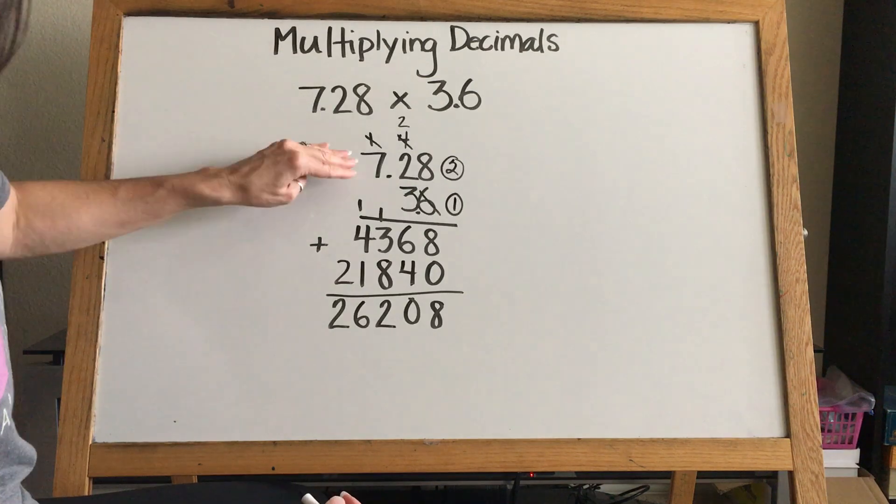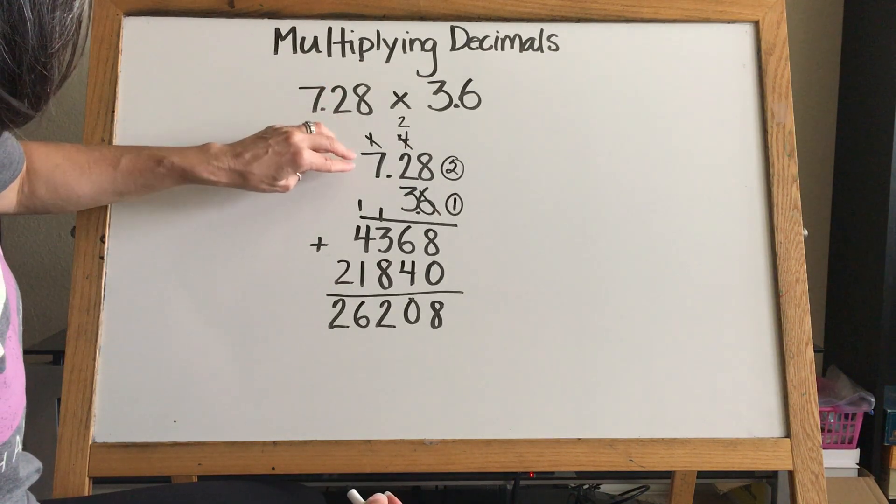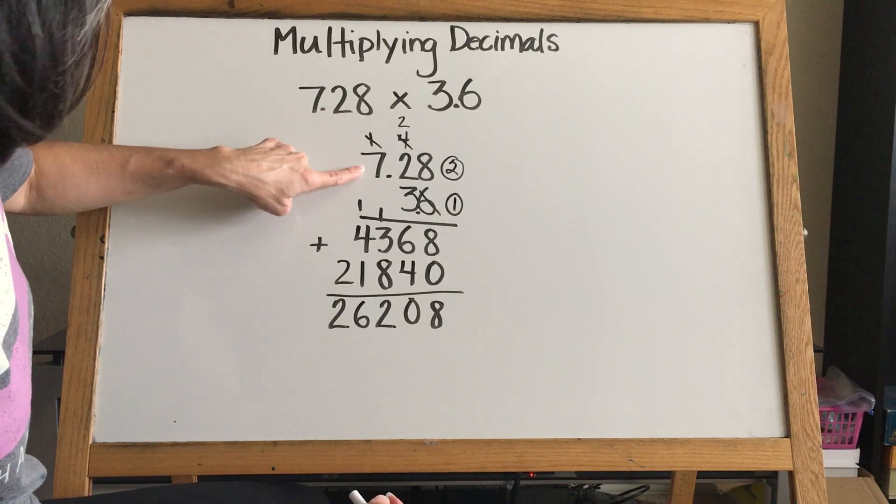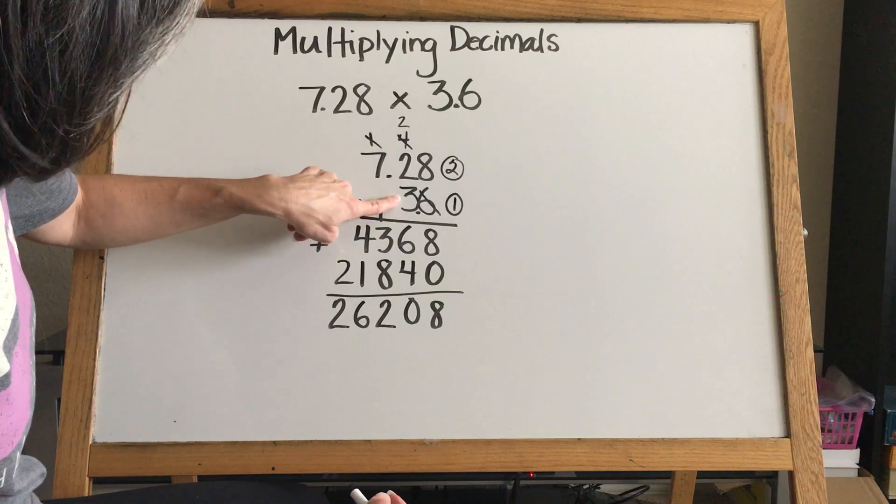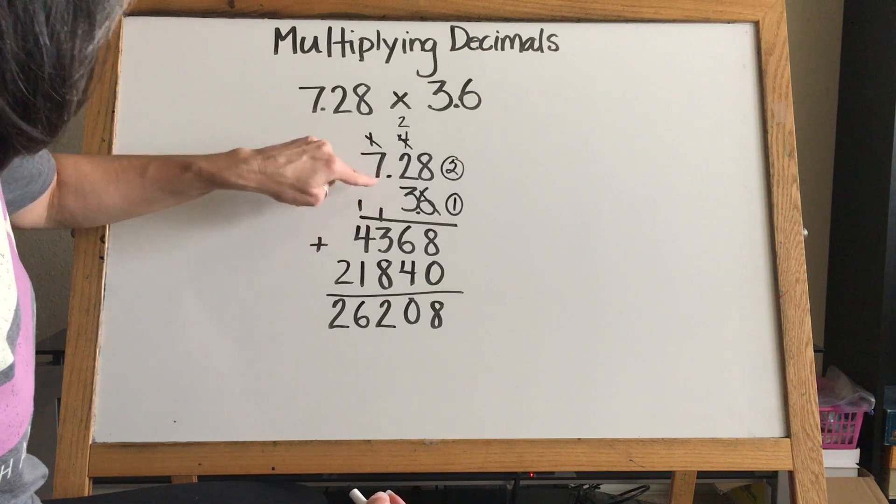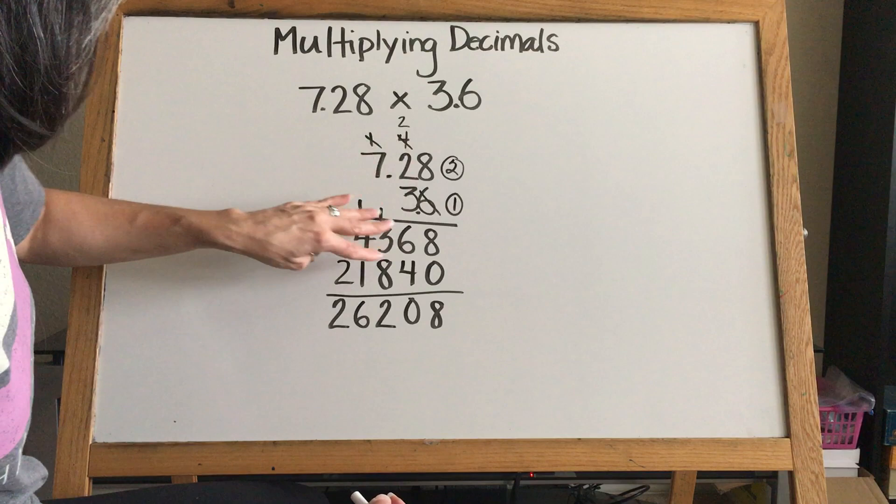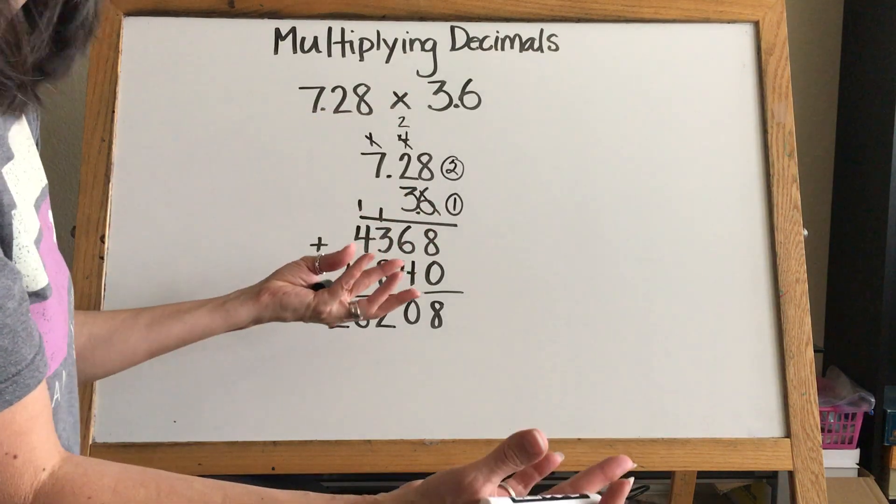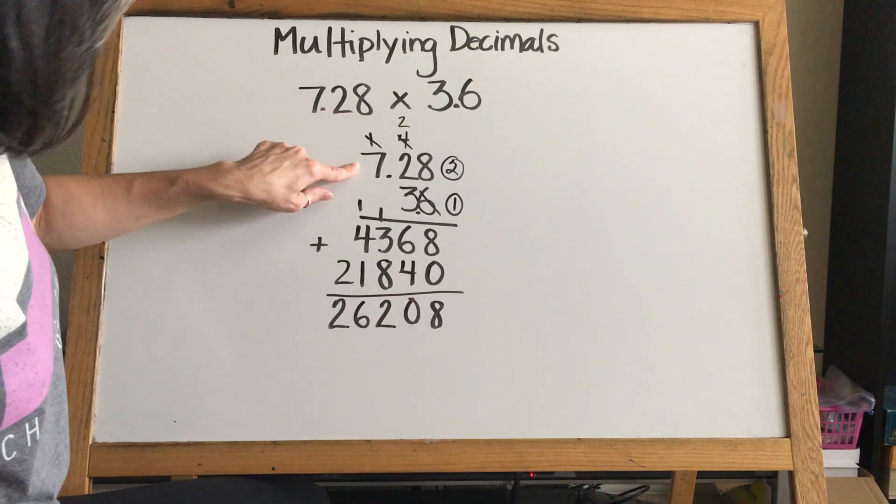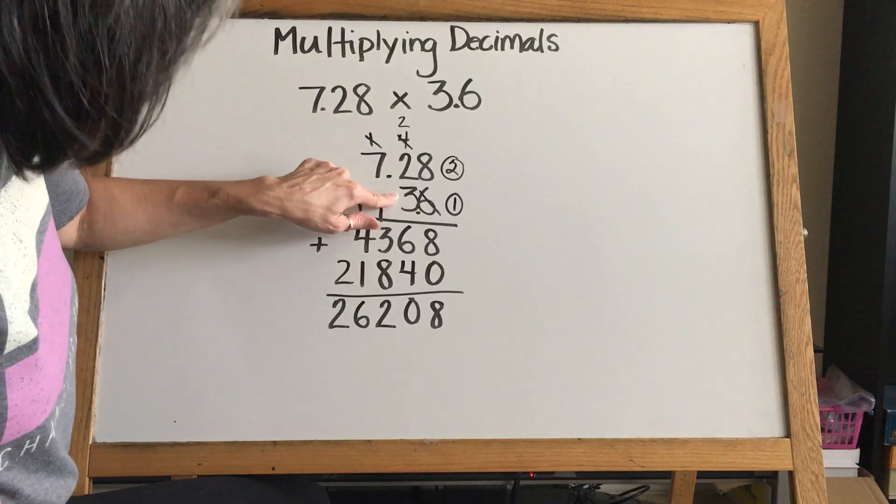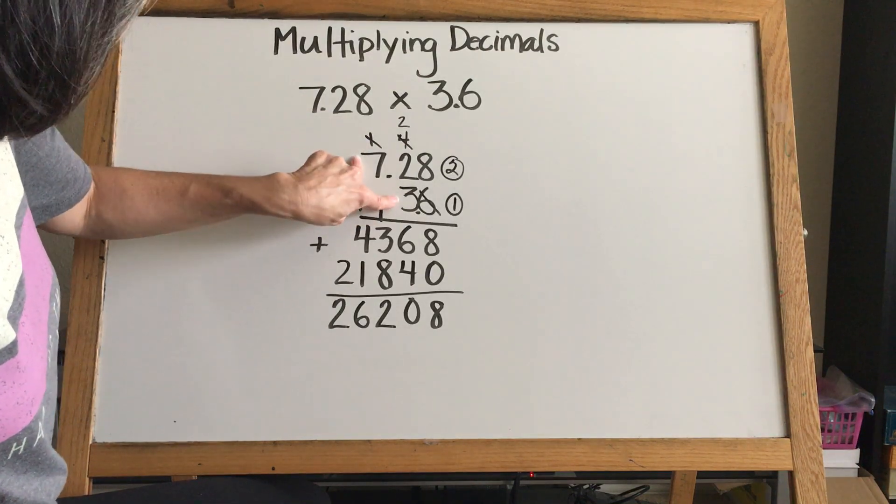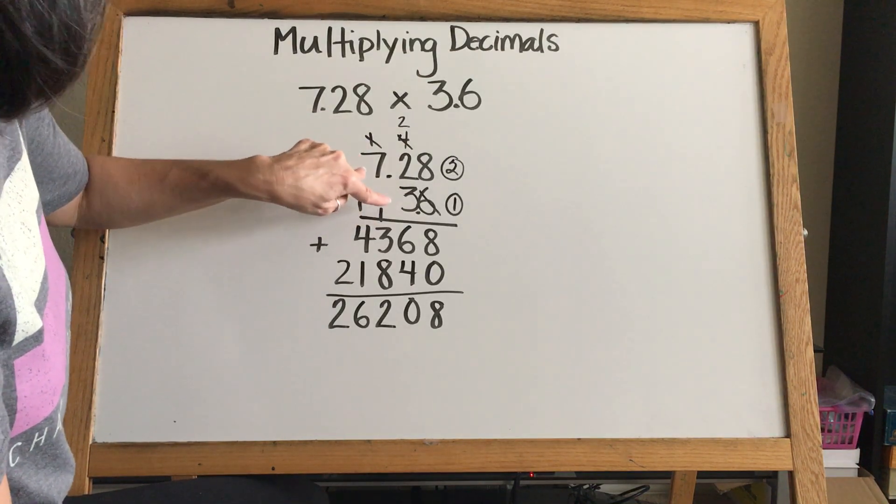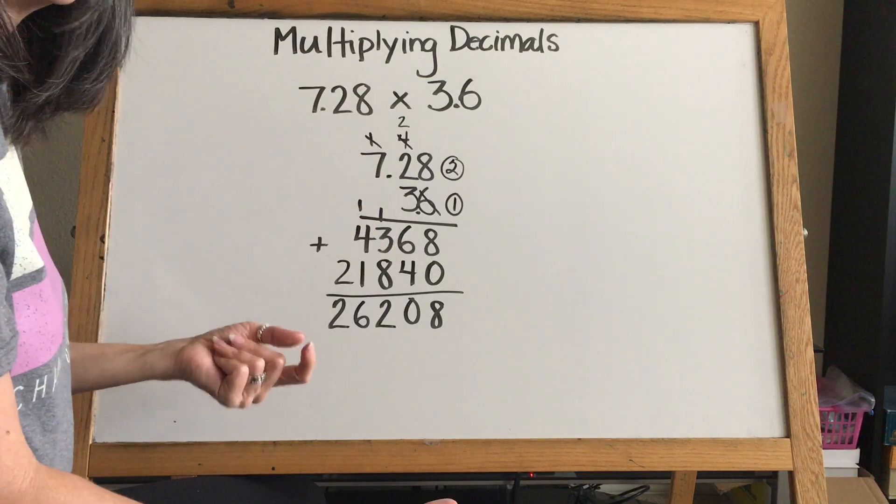Remember, if this wasn't money and we were thinking we have a little over seven groups and a little over three groups, if we're multiplying seven times three our answer is going to be around 21, right? But this is a little bit more than seven and this is a little bit more than three. So seven times three is 21, our answer is going to be a little bit more than 21 after we move our decimal.